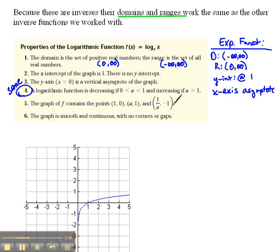And also, we had some points. For the exponential function, we had points of 0,1. We had 1,a, and then we had -1, 1 over a. Well, again, since we're talking about inverses, you would expect that those would switch x and y places. And, in fact, they do for the logarithmics. And the graph is smooth and continuous with no corners or gaps.